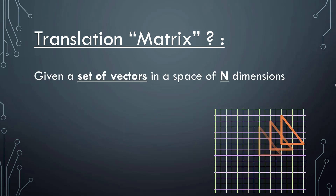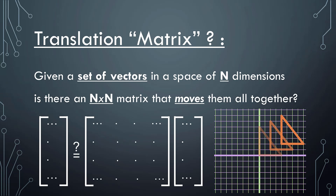Say we have this two-dimensional space and we have this triangle. We can ask even more generally: given any set of vectors in some space that has n dimensions, can we represent a matrix that is n by n that would move all of these vectors together without changing their relation?